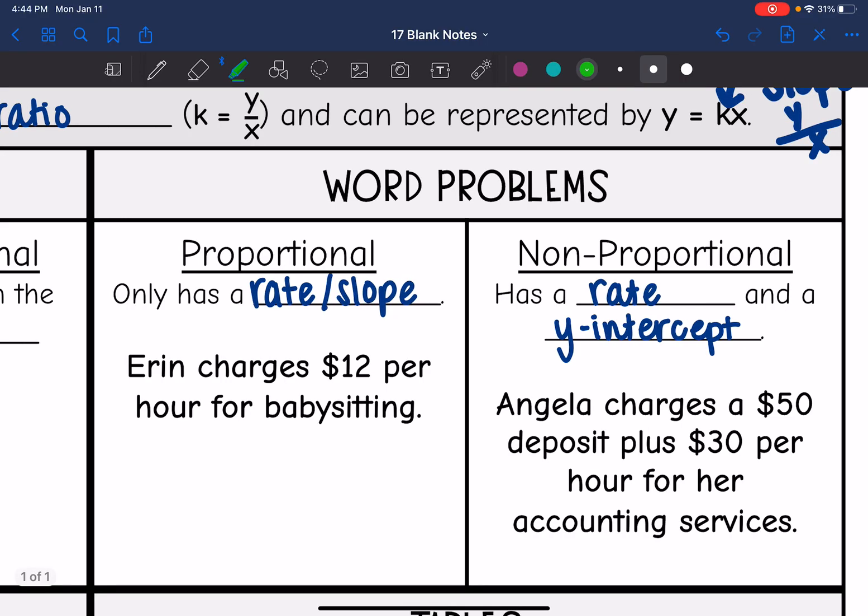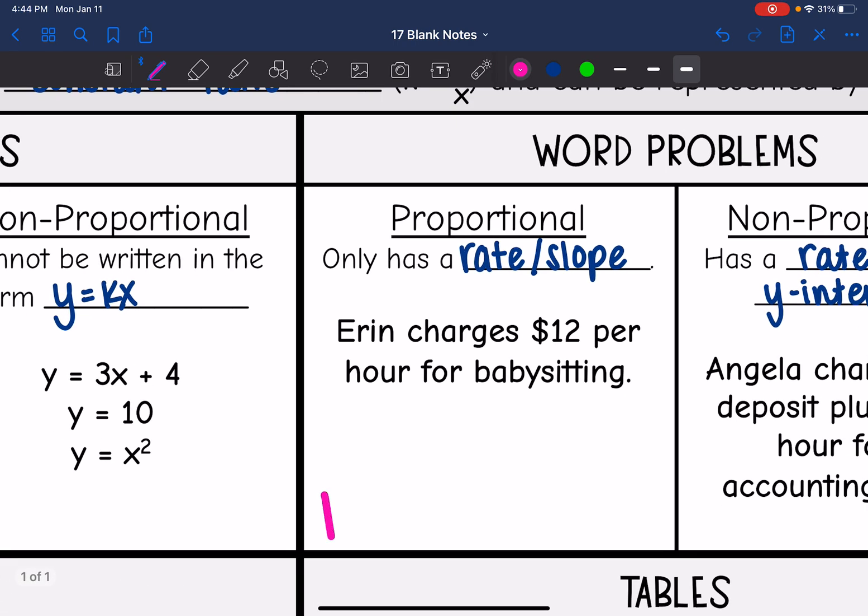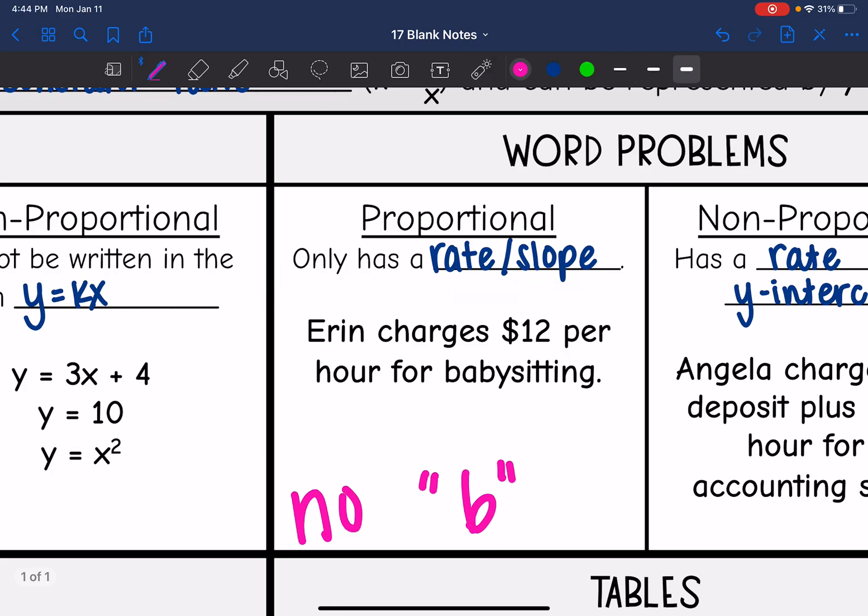Word problems. Remember, in our proportional equations, we had no b, no beginning point. It's the same thing with our word problems. We're going to have no b, we only have a rate or a slope, that constant k. So this one says Erin charges $12 per hour for babysitting. There's no beginning fee. They just give us the slope or the constant ratio of $12 per hour.